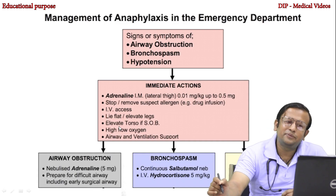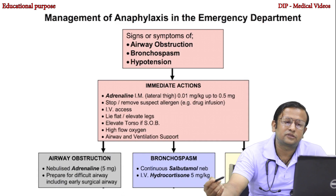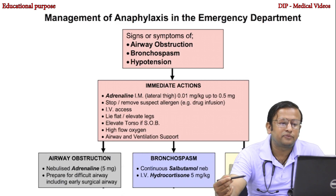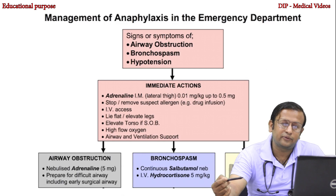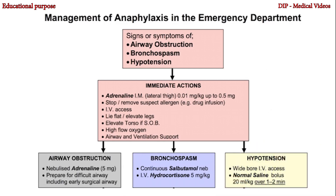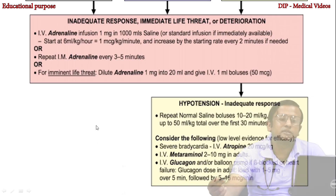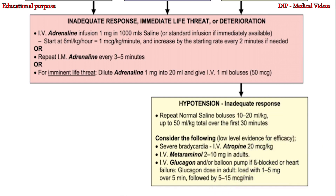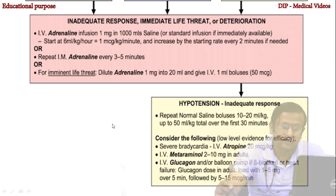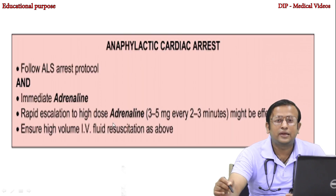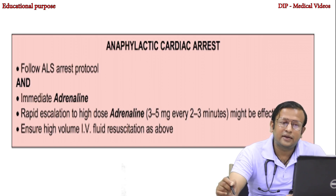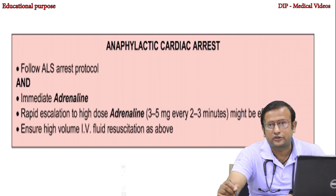The algorithm for management of anaphylaxis in the emergency department covers signs of airway obstruction, bronchospasm, and hypotension. For airway obstruction: nebulize with adrenaline 5 mg and prepare for a difficult airway including early surgical airway. For bronchospasm: continuous salbutamol nebulization or hydrocortisone. For hypotension: IV fluid. If there is inadequate response, immediate life threat, or deterioration, give adrenaline; if hypotension persists, give IV fluid. If there is severe bradycardia, give atropine, metaraminol, or glucagon. If anaphylactic cardiac arrest occurs, follow advanced life support protocol with immediate adrenaline, rapid escalation to high-dose adrenaline, and ensure high-volume IV fluid resuscitation.